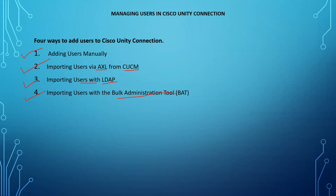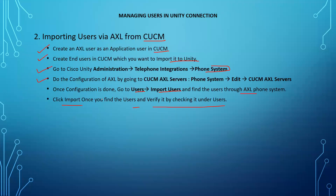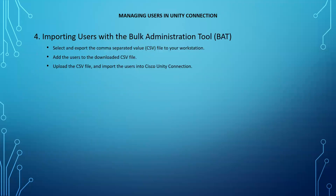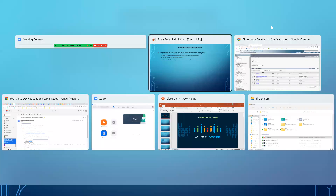Now in this lecture, I'm going to discuss about importing users with the help of the BAT tool. With the help of BAT, what you need to do: you need to select and export the CSV file to your workstation first, then you need to add the users to the downloaded CSV file, and then upload the CSV file and import the users into Cisco Unity Connection. Let me just show it to you practically how we can achieve this.